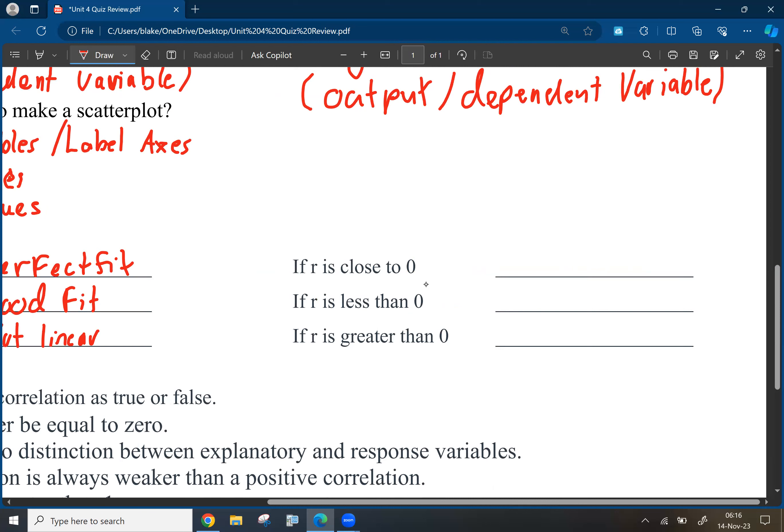If R is close to zero, it is not a good fit. If it is less than zero, then it is negative relationship. And if it is greater than zero, it is a positive relationship. So positive correlation, negative correlation, basically.